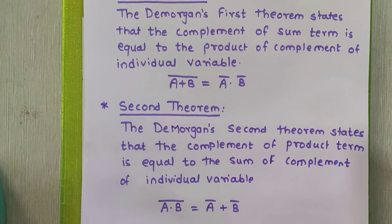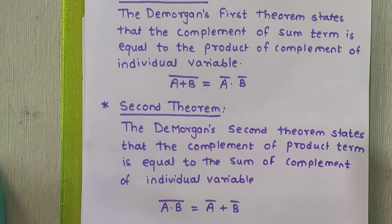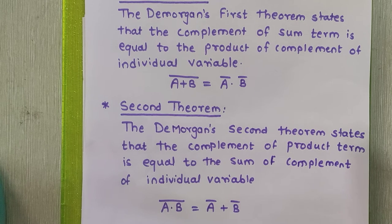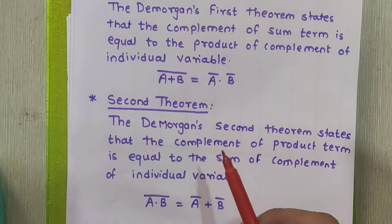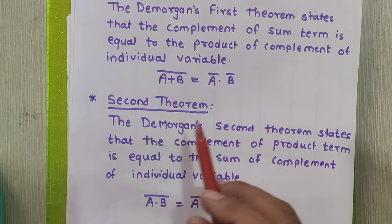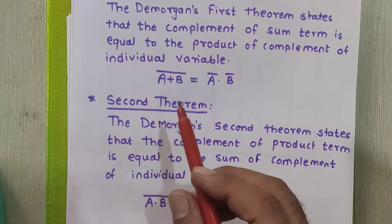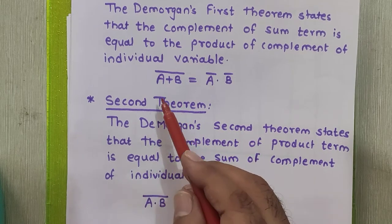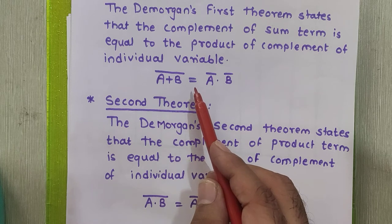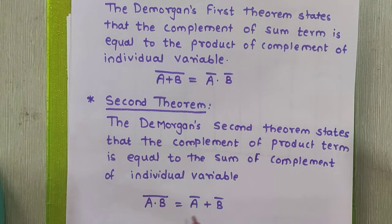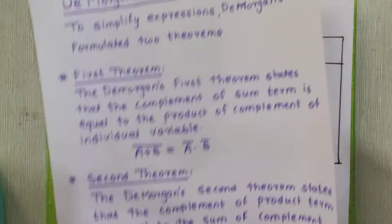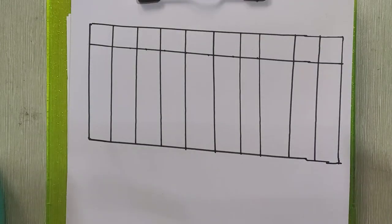We will now see the proof of both theorems of De Morgan's. To prove these theorems, we are going to prepare a table where we will create a column for each and every term given in the theorems. So I will prepare a table here.